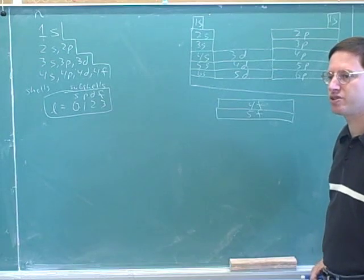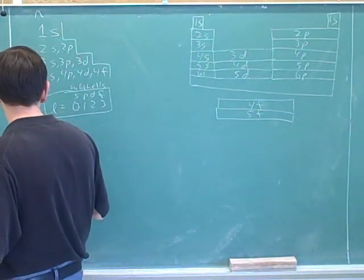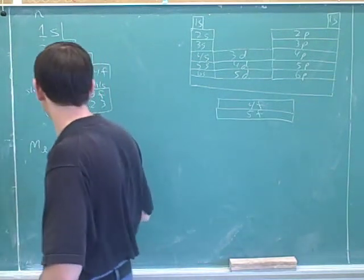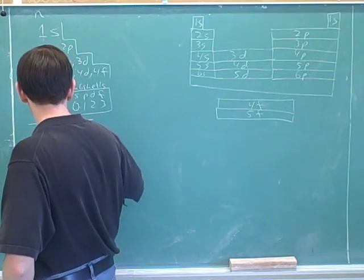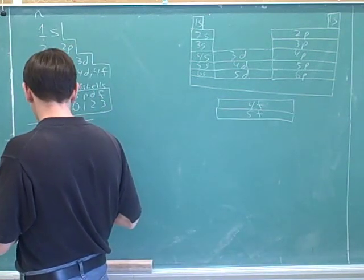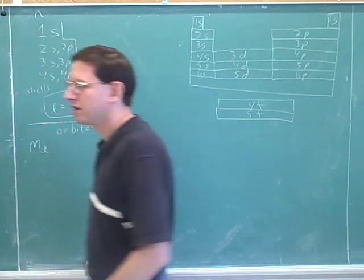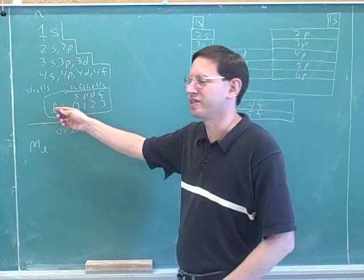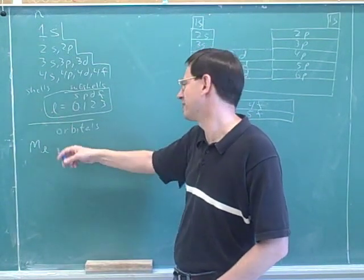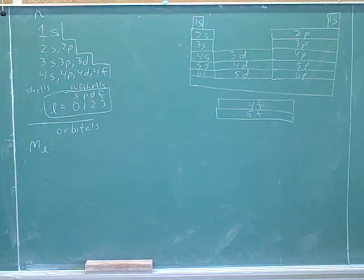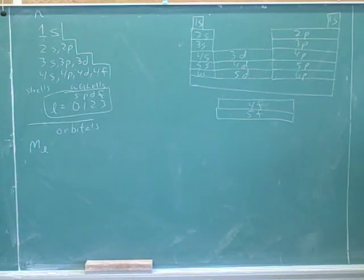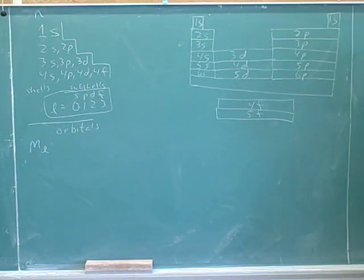We need to give names to the orbitals, and we need a new quantum number for that. The quantum number for the orbitals is m sub l. Different orbitals have different m sub l values. This is called the orbital magnetic quantum number. What it really tells you is which orbital you're in — that's one of the things it tells you.